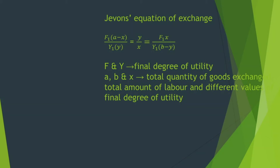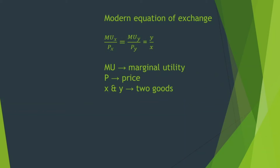By giving importance to the final degree of utility, Jevons derived his equation of exchange: F1(A − X) / Y1(Y) = Y/X = F1(X) / Y1(B − Y). In this equation, F and Y represent the final degree of utility; A, B, and X represent the total quantity of goods exchanged, total amount of labor, and different values of the final degree of utility. This formula is similar to the modern formula: MUX/PX = MUY/PY = Y/X.